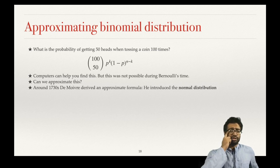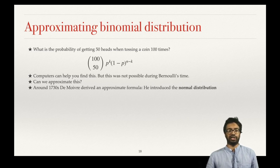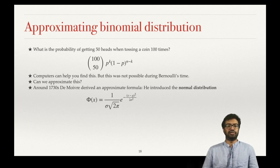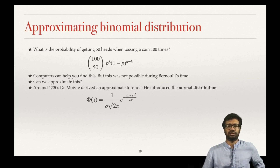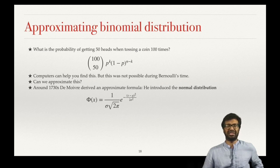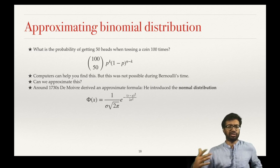And so this is what De Moivre comes up with. De Moivre comes up with an approximate formula, and along with it he introduces what we now call the normal distribution. This is the formula De Moivre came up with — it is called the normal distribution, and you might have heard it as a bell curve.